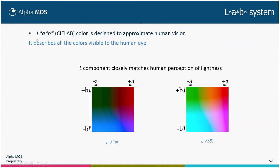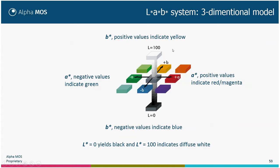This can be transformed to LAB, which is very close to human vision and describes all the colors visible to the human eye. L indicates lightness. You can compare 25% light and 75% light with the same color. A ranges from minus A to plus A — from green to red — and B ranges from plus B to minus B — from yellow to blue. In three dimensions, the LAB system appears with the A axis, B axis, and L axis, where L is low for dark colors and close to 100 for very light samples.